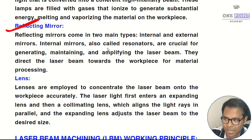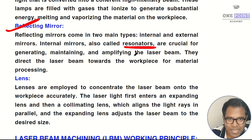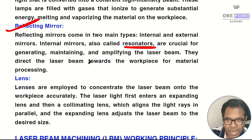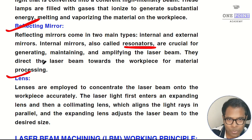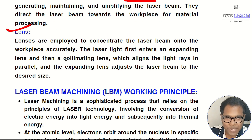Reflecting mirrors are of two types: internal and external. Internal mirrors, also known as resonators, are crucial for generating, maintaining, and amplifying the laser beam — the initially generated laser strikes back and forth between these two internal reflectors to get amplified. The external mirror guides the laser light towards the workpiece. Finally, the convex lens ensures all lasers converge to a single point before striking the workpiece.